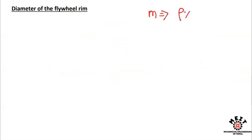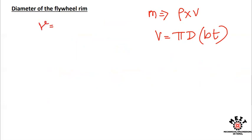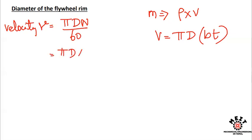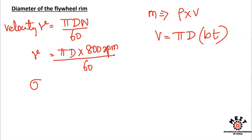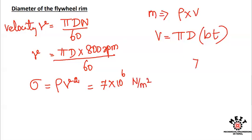Mass equals density times volume, and volume equals π×d×b×t. Velocity V equals π×d×N divided by 60, with N equal to 800 RPM. The safe stress formula is: sigma equals density times velocity squared. Safe stress sigma is 7 MPa, which is 7×10⁶ N per meter squared.